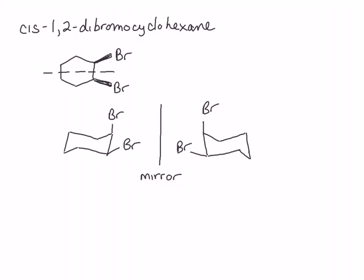If you do so, what you will see is that these two are non-superimposable images. However, they can interconvert through a ring flip. So if you've made these two molecules, do a ring flip with one of them and you should see that they will, in fact, overlap — they are superimposable. This means that this molecule is achiral, even though in its most common conformation, the chair conformation, it would appear to have non-superimposable mirror images. We can determine that this molecule is achiral by looking at it in its most symmetrical conformation, the flat hexagonal cyclohexane. cis-1,2-Dibromocyclohexane is an example of a molecule that has chiral centers but is achiral.